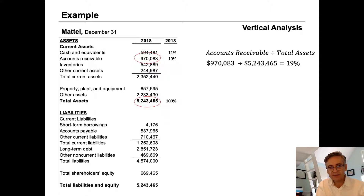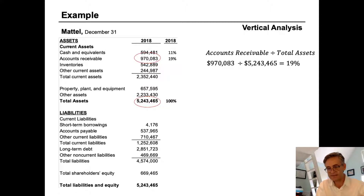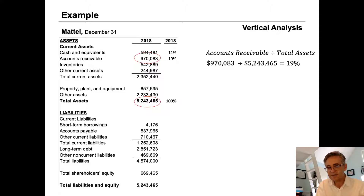Accounts receivable is 970 divided by $5,243,000,000, which gives us 19%. And if we move on to the other items on the balance sheet, we'll see that they're all calculated the same way, holding the base item always the same as total assets. And we can do this calculation for any number of years — you could add on 2017, 2016, and 2015, and so on.